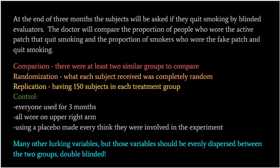At the end of three months, the subjects will be asked if they quit smoking by blinded evaluators. The doctor will compare the proportion of people who wore the active patch that quit smoking versus the proportion who wore the fake patch and quit. It's important that the evaluators — even though they're just asking whether someone quit — are also blinded, making this a double-blind study.